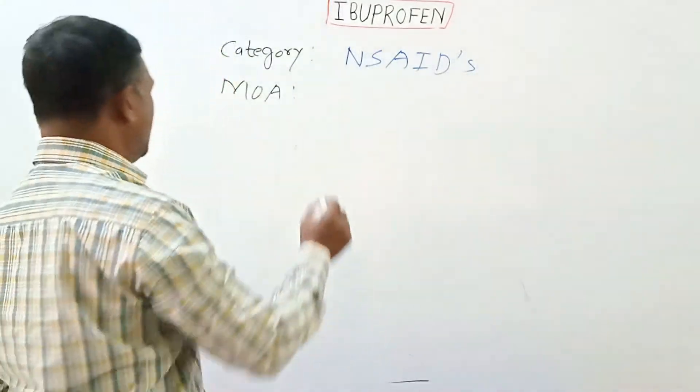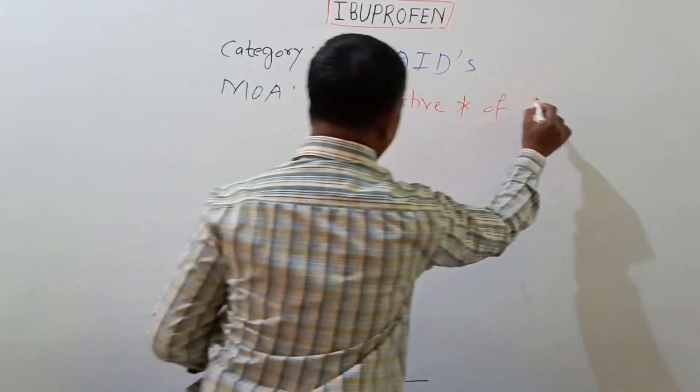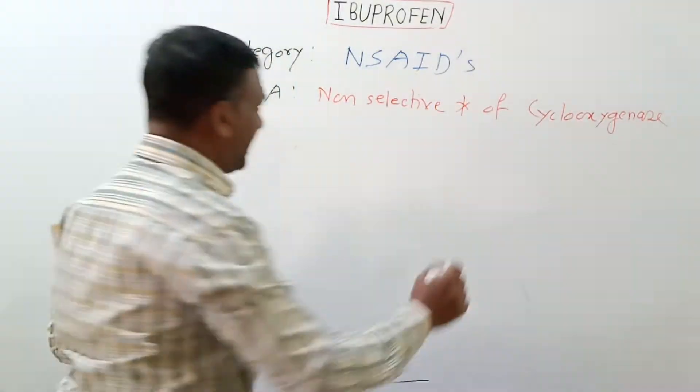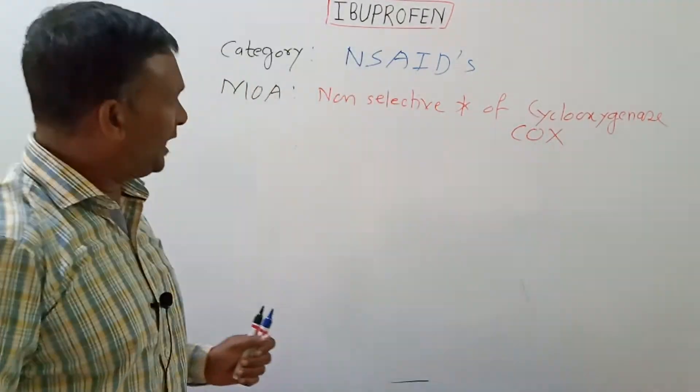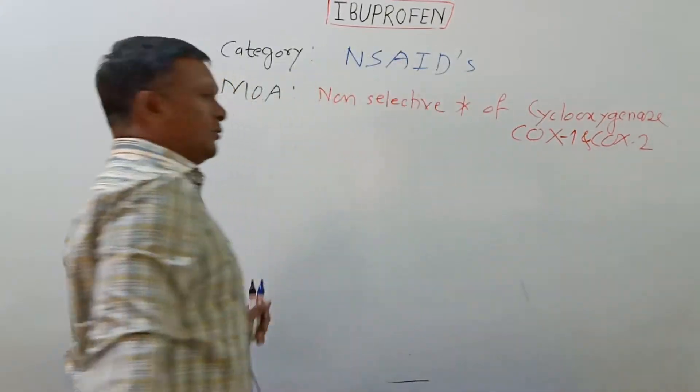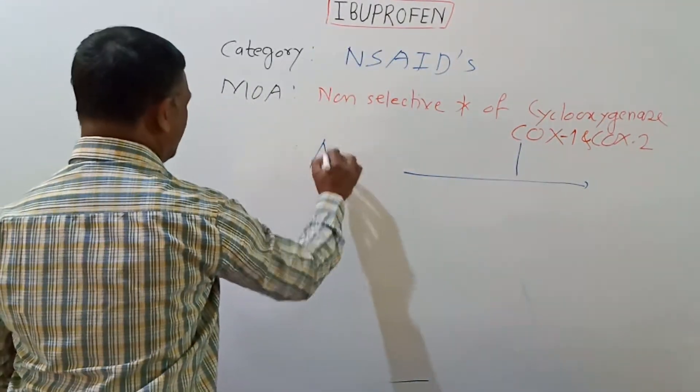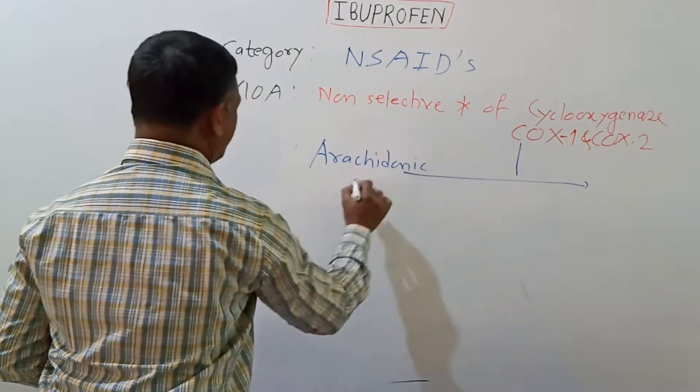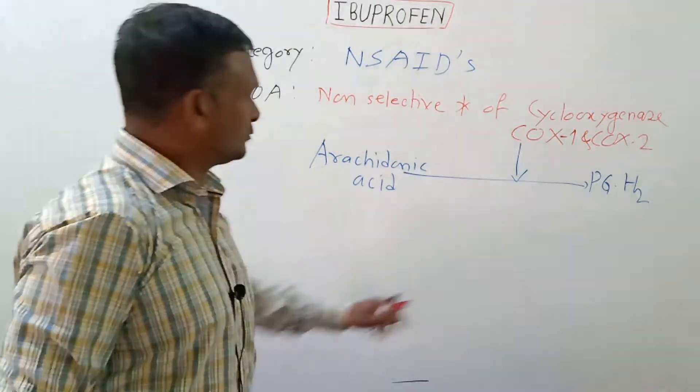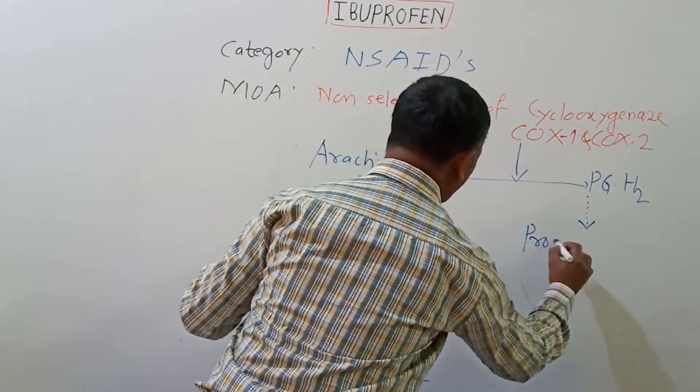The cyclooxygenase is abbreviated as COX and it is of two types, COX-1 and COX-2. This enzyme COX-1 and COX-2 is involved in conversion of arachidonic acid to prostaglandin H2, PGH-2, which is acted upon by the other enzymes and gets converted to prostaglandin.